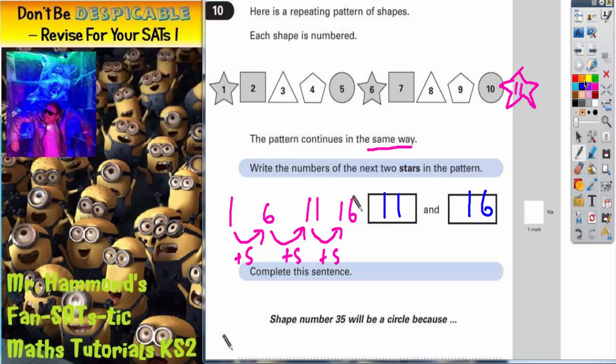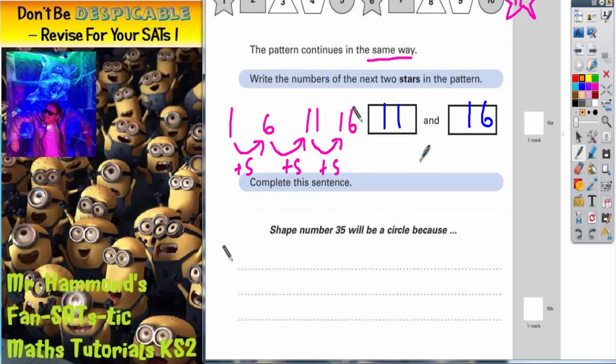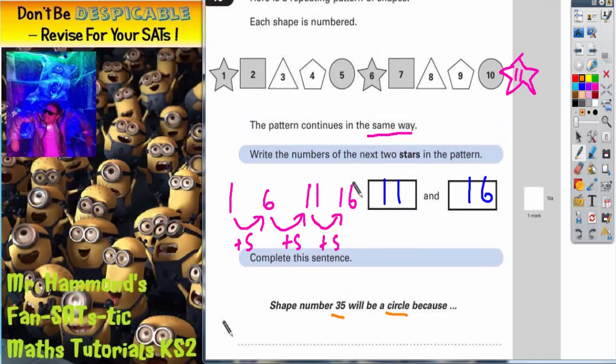The second part of the question says, "Complete this sentence: Shape number 35 will be a circle because..." So it is telling us that it will definitely be a circle. Now if we look at what else is already a circle...